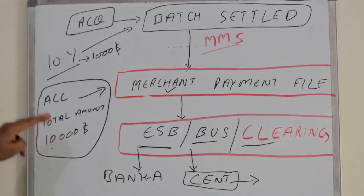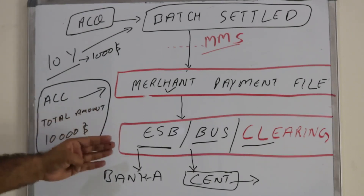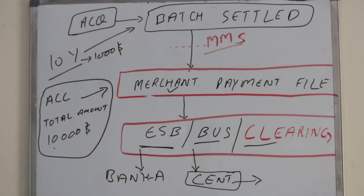This is the complete flow of merchant settlement. It goes through: first, authorization; second, merchant reconciliation; and finally, capturing all transactions, generating the merchant payment file, and submitting it to the ESB or bus system. Once the file is processed, the merchant gets the money in their saving account. If you have any suggestions, feedback, or queries, leave a comment on the YouTube channel. Thank you very much.